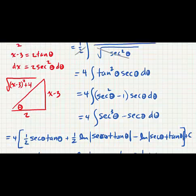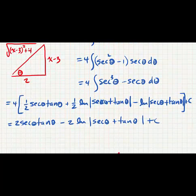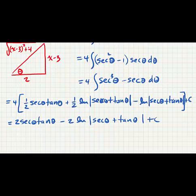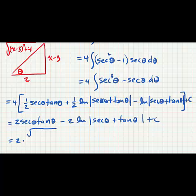We can now use that triangle to convert back to x's down here. This will give us 2 times sec(θ). sec(θ) is the square root of (x - 3)^2 + 4 divided by 2.